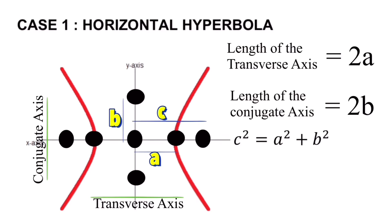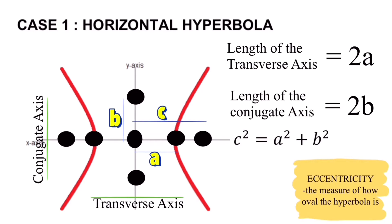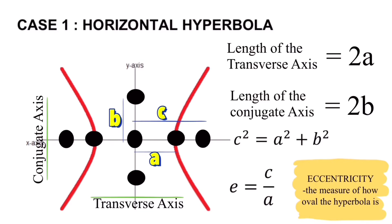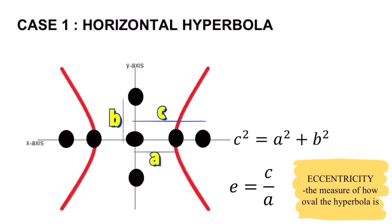The equation that relates a, b, and c is c squared equals a squared plus b squared. We also have eccentricity, which is defined as the measure of how oval the hyperbola is. The formula for eccentricity is c over a. We remember that eccentricity for a hyperbola is always greater than one.